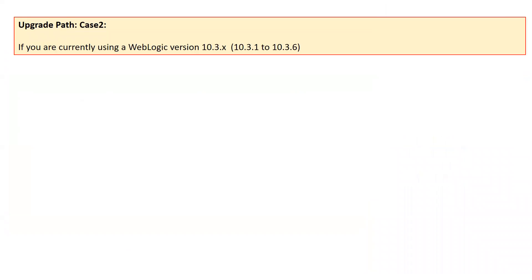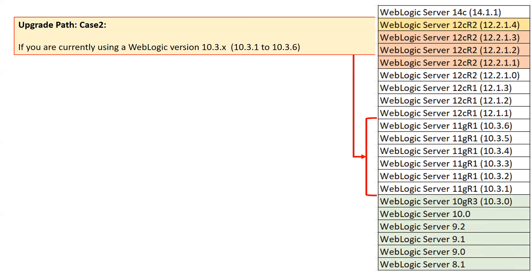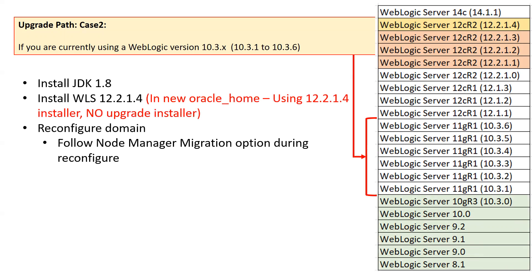After completing case one, you are now on 10.3.6, so case two applies to you as well. Case two covers upgrading from any 10.3.x version — 10.3.1 through 10.3.6 — to 12.2.1.4. The upgrade path is: first install the latest certified JDK 1.8, then install WebLogic Server 12.2.1.4 binaries in a new Oracle home. For upgrading from 10.3.x you will not get an upgrade installer; you must install WebLogic in a new Oracle home.